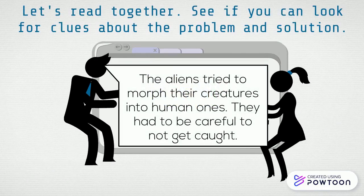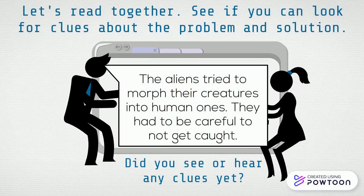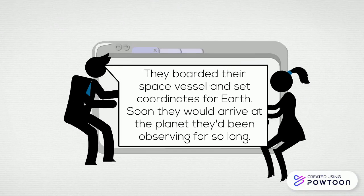Let's read together. See if you can look for clues about the problem and solution. The aliens tried to morph their creatures into human ones. They had to be careful not to get caught. Did you see or hear any clues yet? They boarded their space vessel and set coordinates for Earth. Soon, they would arrive at the planet they'd been observing for so long.